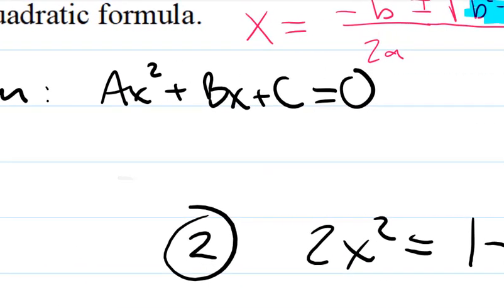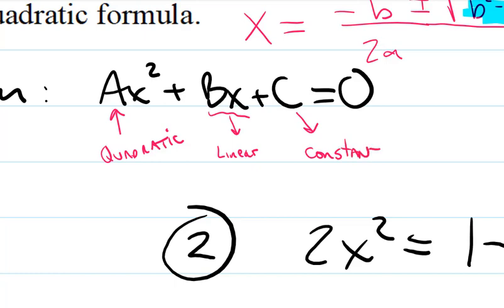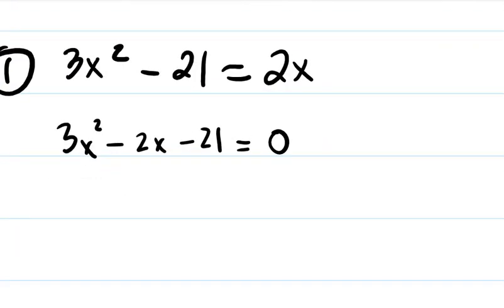The x squared term is called the quadratic term because it has a degree of two. The bx term is the linear term — its degree is just one, so we don't write the exponent. The c is the constant — just a number, no variable. So the quadratic term, linear term, and constant term all need to be on the same side. Our a value is 3, b value is negative 2, and c value is negative 21.